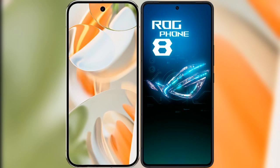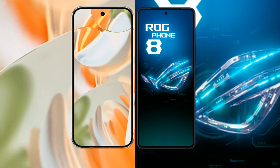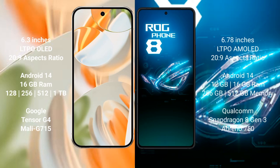I will compare the new Google Pixel 9 Pro with the Asus ROG Phone 8. The Pixel 9 Pro features a 6.3-inch LTPO OLED display with a 2029 resolution. The Asus ROG Phone 8 features a 6.78-inch LTPO AMOLED display with a 2029 resolution.